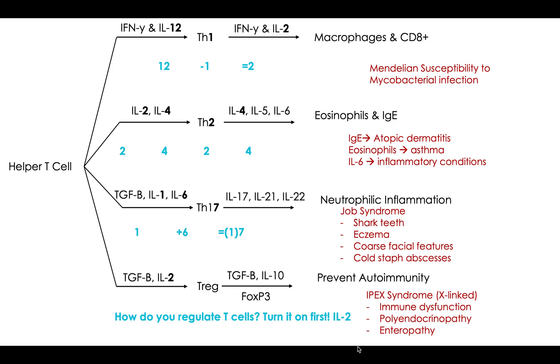Then we have IL-1 and 6. So 1 plus 6 gives you 7 to turn on the Th17. And that gives off the higher numbers that you can remember as lots of teeth and Job syndrome. And last, how would you regulate a T-cell? Well, you'd have to turn it on first. So IL-2 gives you the T-regulatory to give off IL-10.